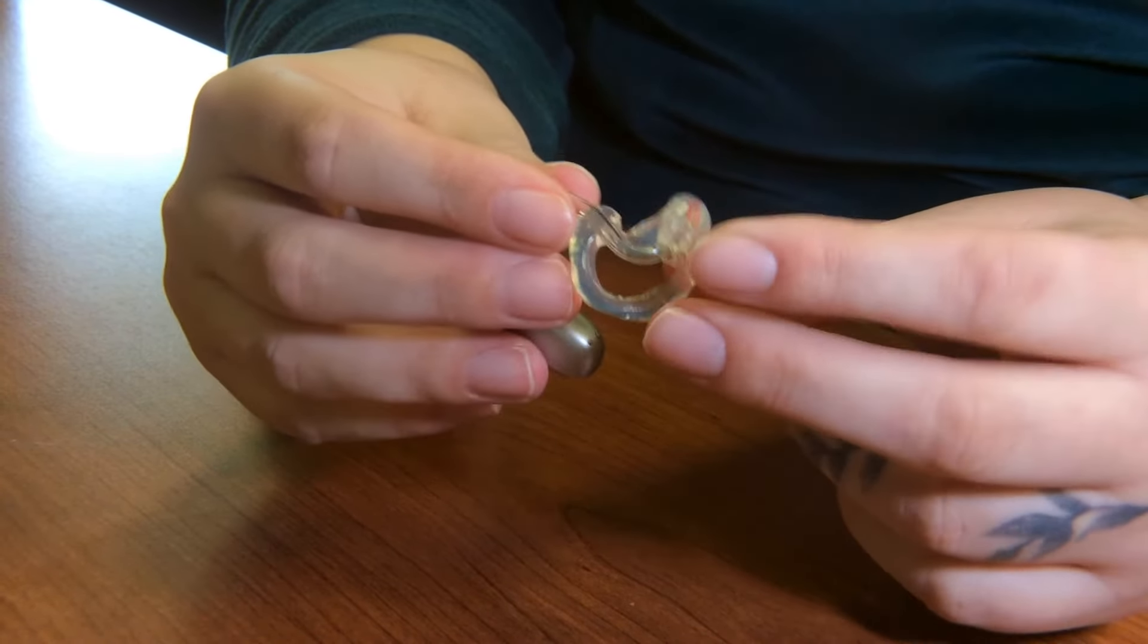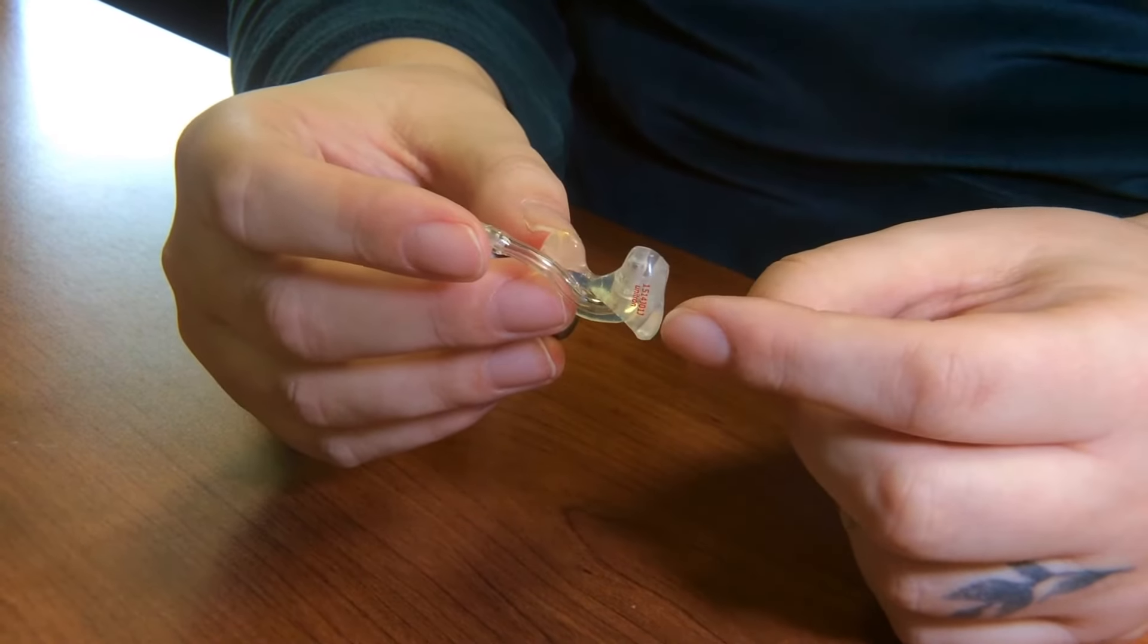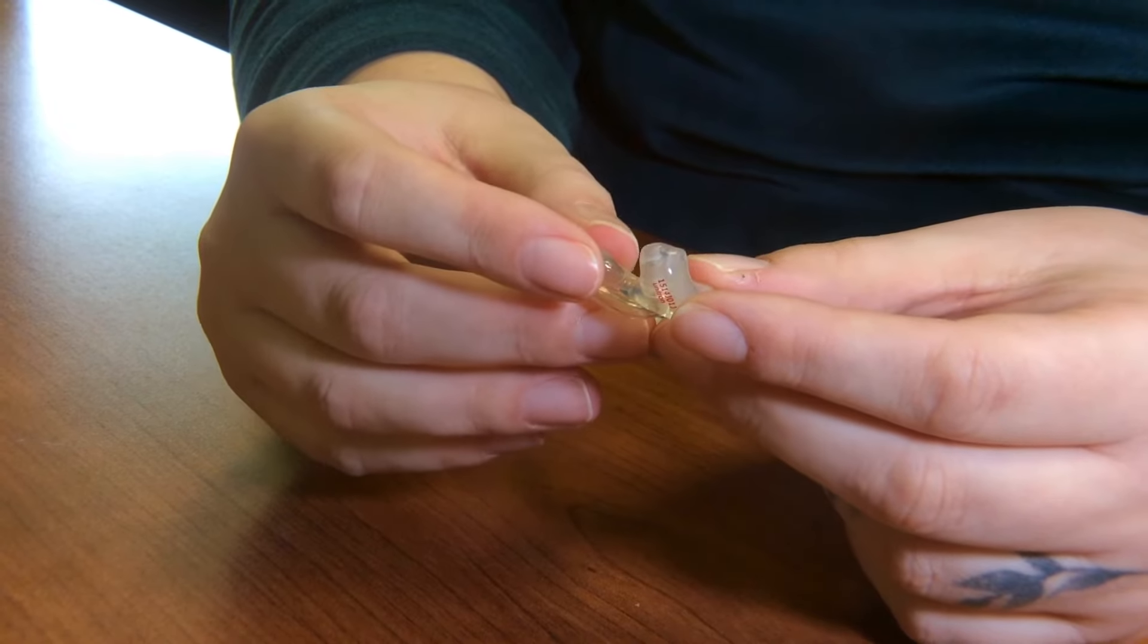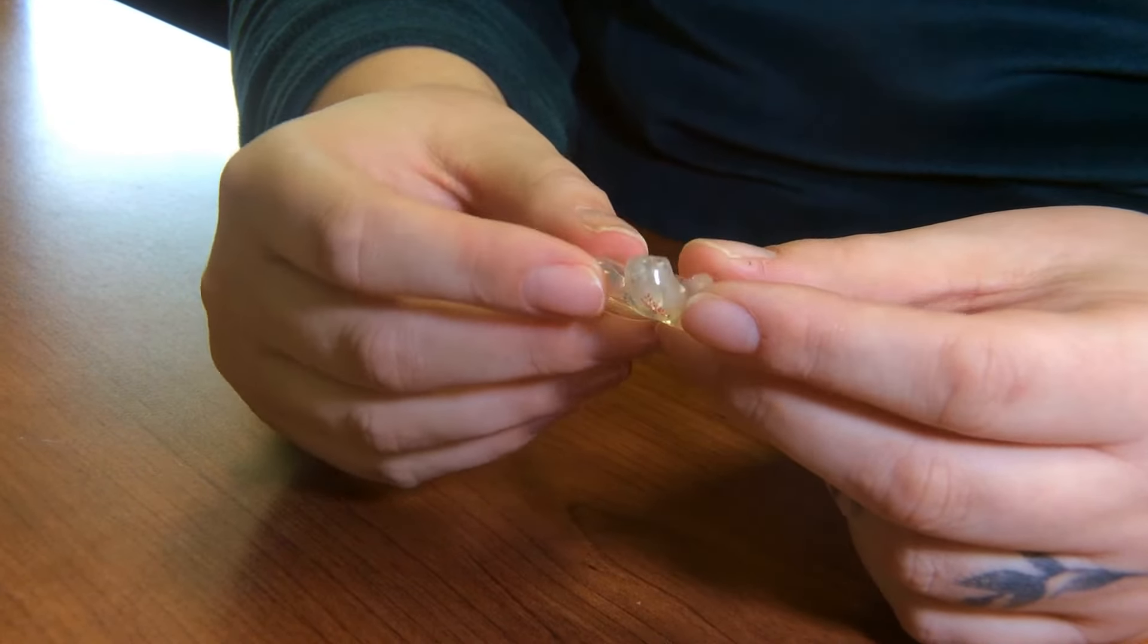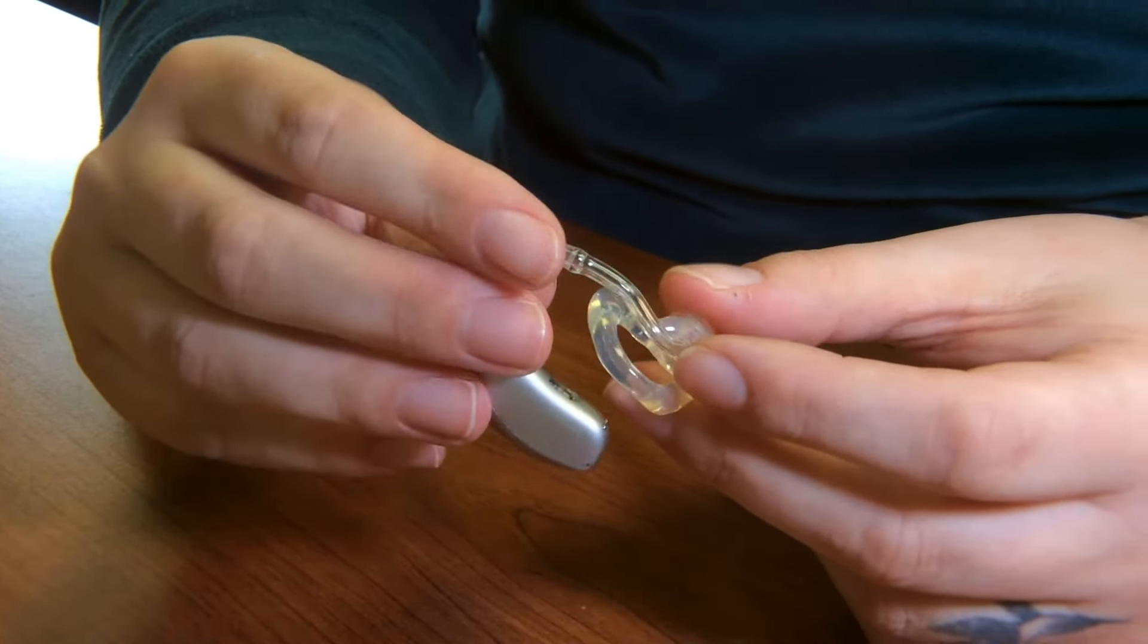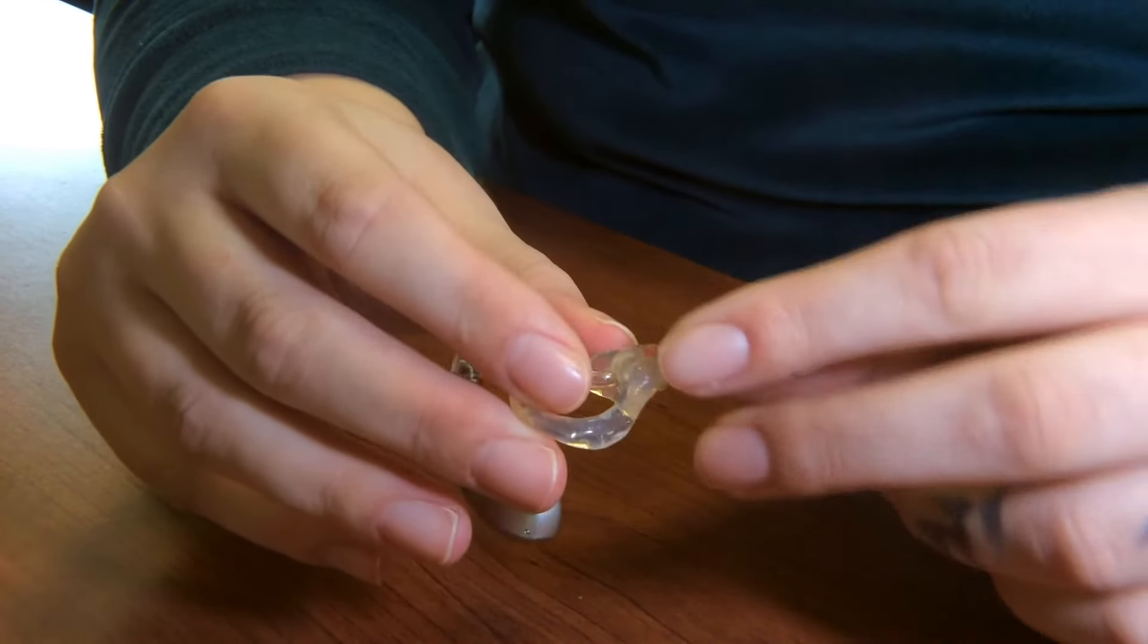So the first thing that you're going to want to look for visually is on the ear mold. You want to make sure that there are no cracks, that there's no debris like wax stuck in any of the portions of the ear mold, and that there is no moisture that is hiding out in any of the vents.